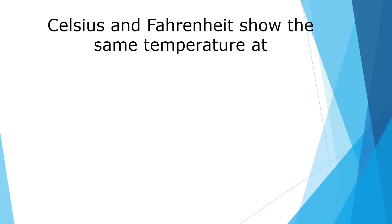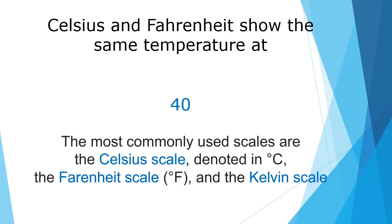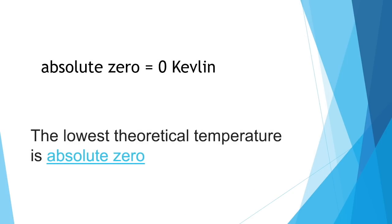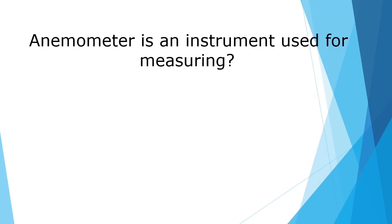The most commonly used temperature scales are the Celsius scale, denoted in degrees Celsius, and the Fahrenheit scale, denoted in degrees Fahrenheit. The third temperature scale is the Kelvin scale. Absolute zero is the lowest theoretical temperature, equal to zero Kelvin.